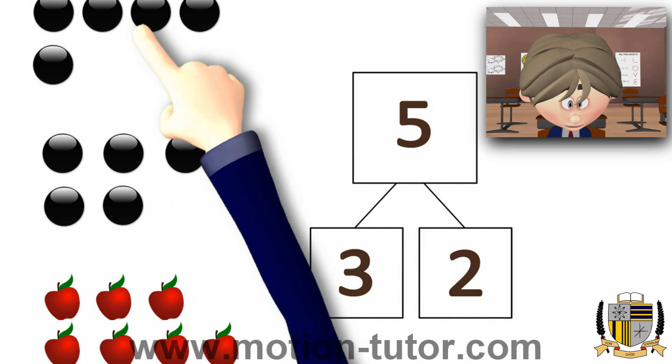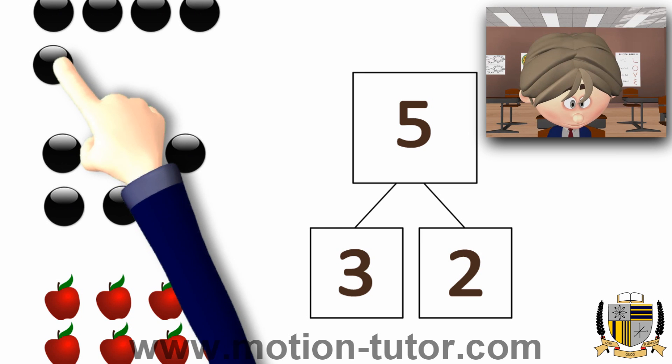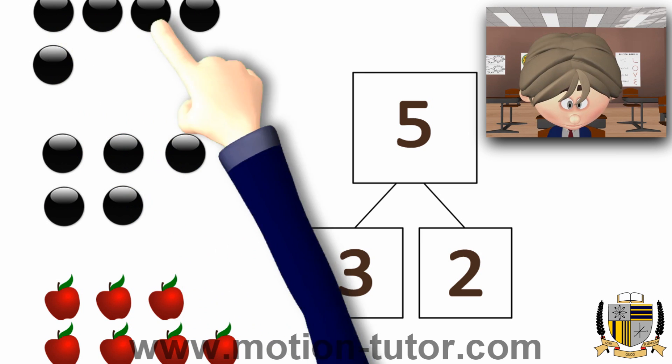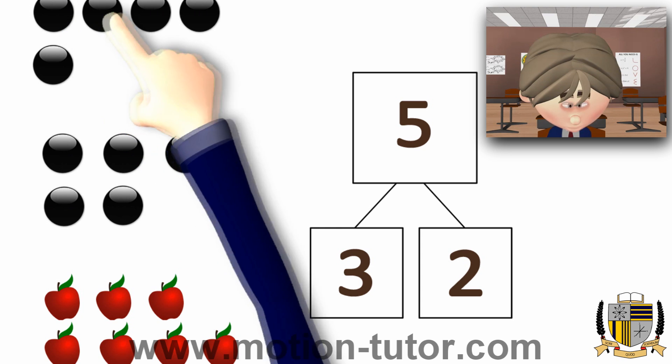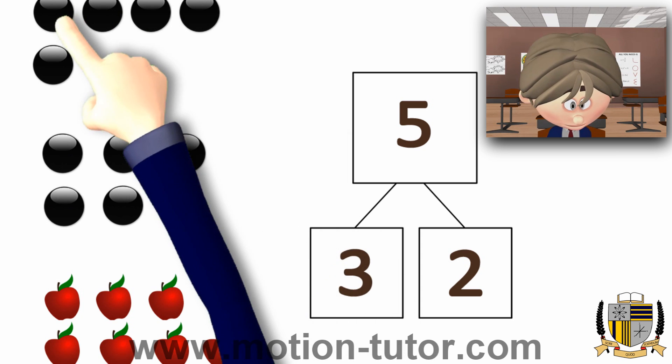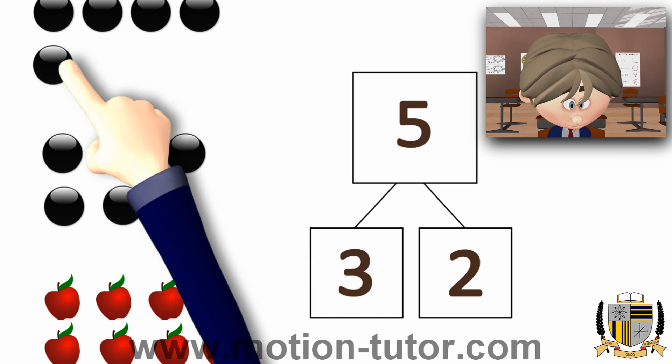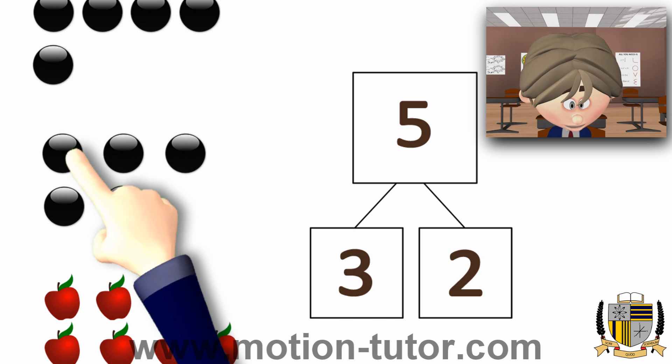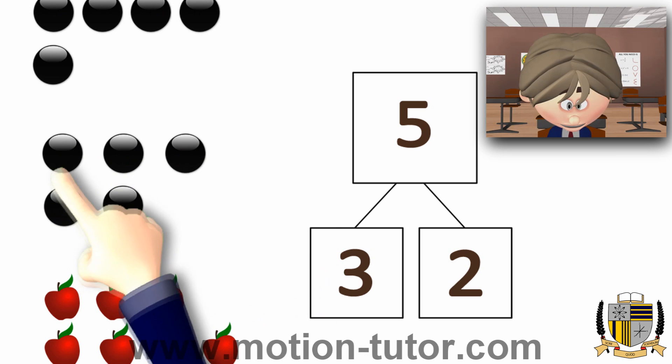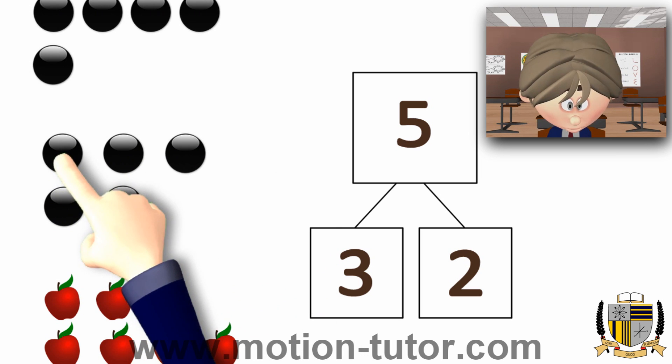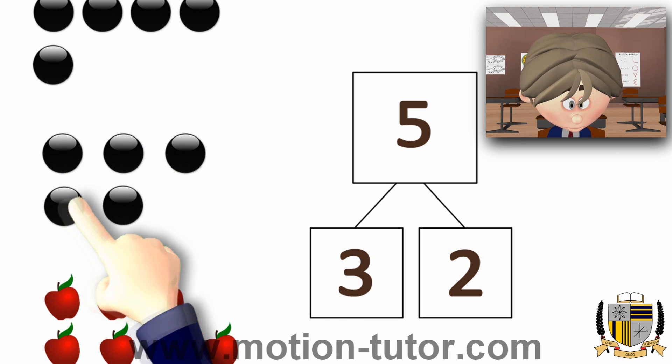Over here, we have 1, 2, 3, 4, 5. But, it's being represented by, or it's being put together by 4 and this 1. That makes 5. Over here, we have 1, 2, 3, 4, 5. And that is shown to be 3 and 2.